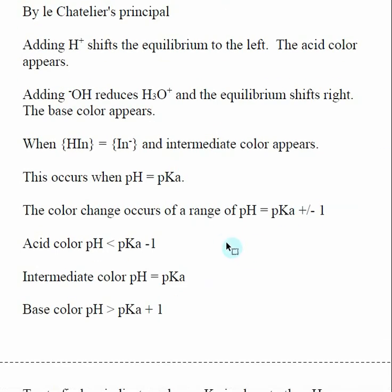In general, you will have that intermediate color when the pH is plus or minus one of the pKa. If our pH is less than one away from our pKa, we will have the color of our acid, HIn, and if our pH is greater than one away from the pKa, we will have the color of the conjugate base, In-minus.